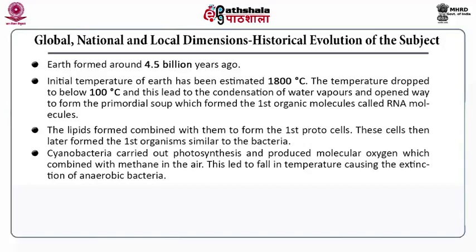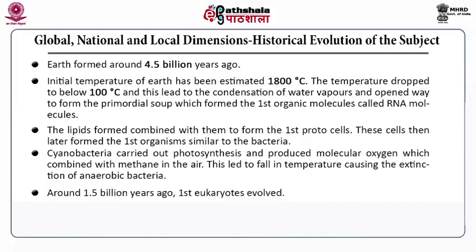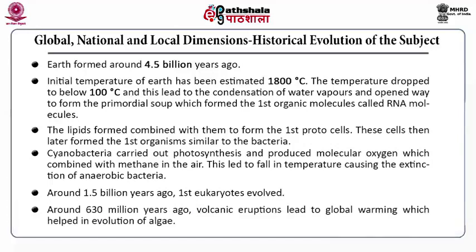The lipids combined with the organic molecules, that is RNA molecules, to form the first protocells. These cells were then later formed into the first organisms, and these organisms were similar to bacteria. Cyanobacteria carried out photosynthesis and produced molecular oxygen. That molecular oxygen further combined with methane in the air and that combination led to a fall in temperature, causing the extinction of anaerobic bacteria. The eukaryotes evolved around 1.5 billion years ago. Around 630 million years ago, volcanic eruptions led to global warming which helped in the evolution of algae.